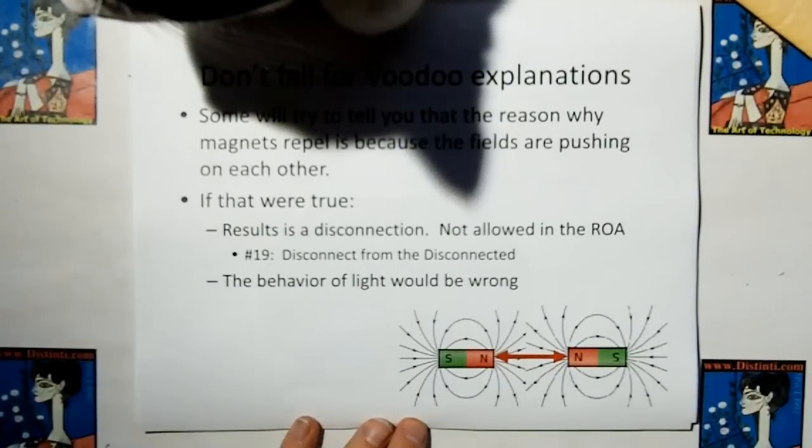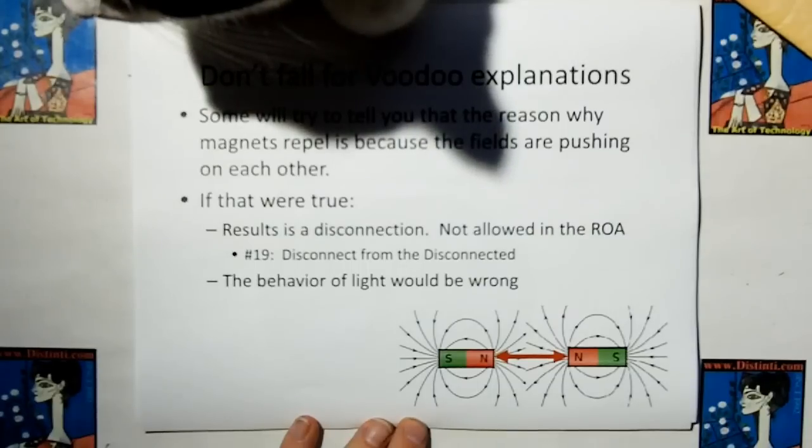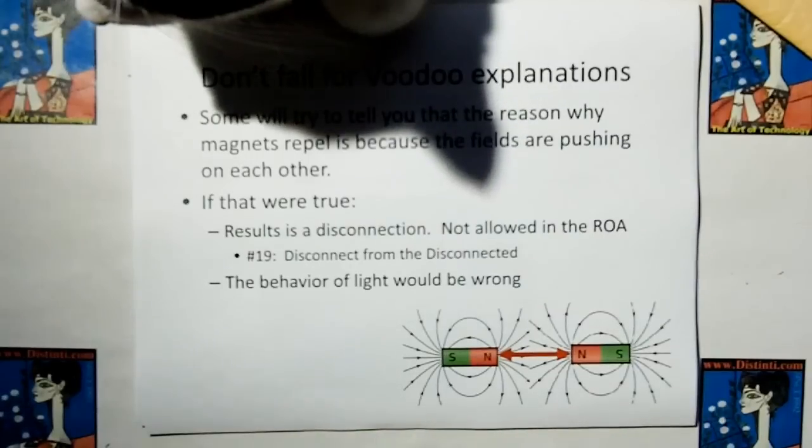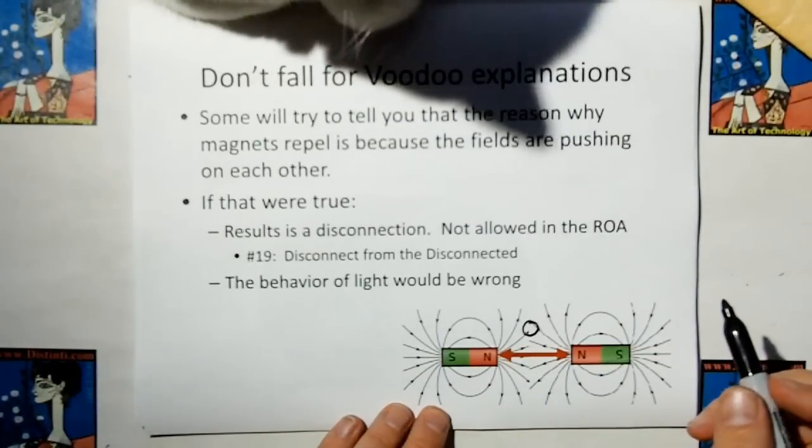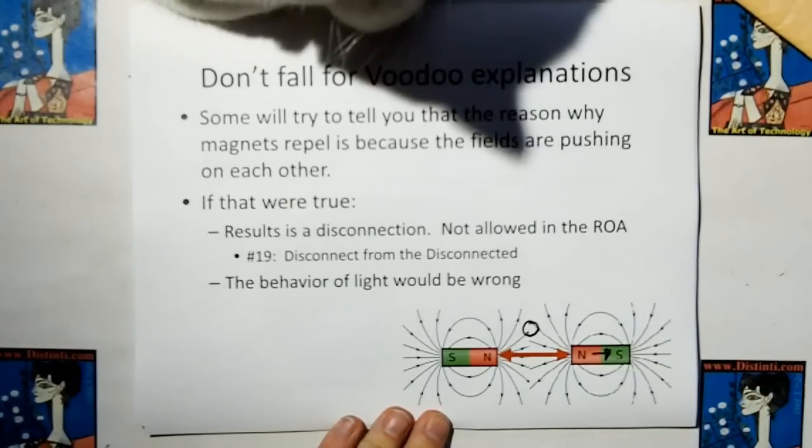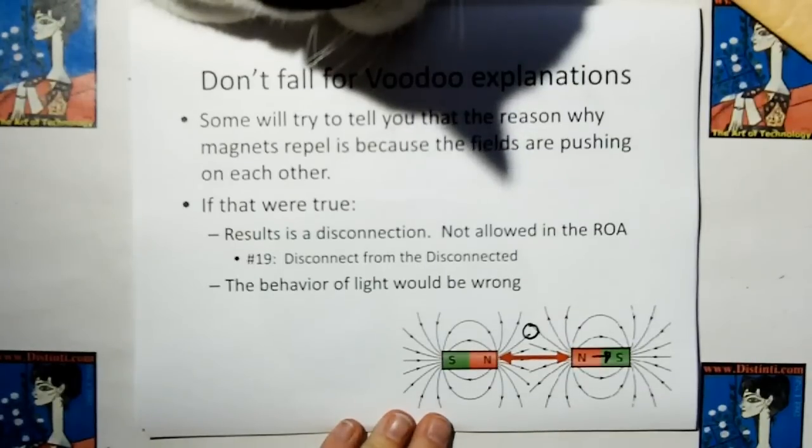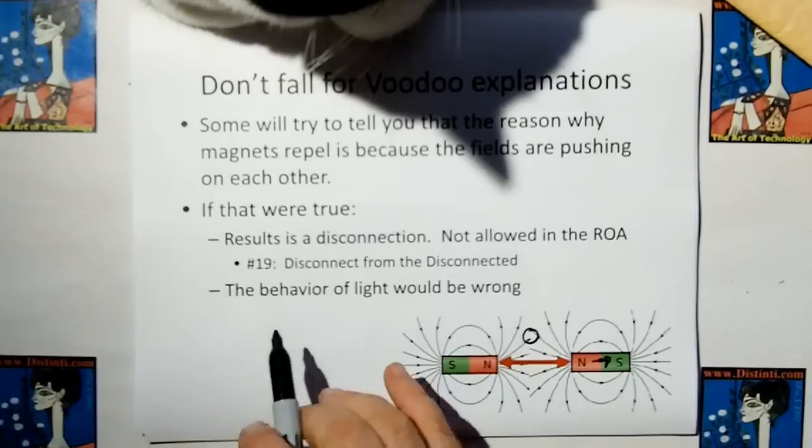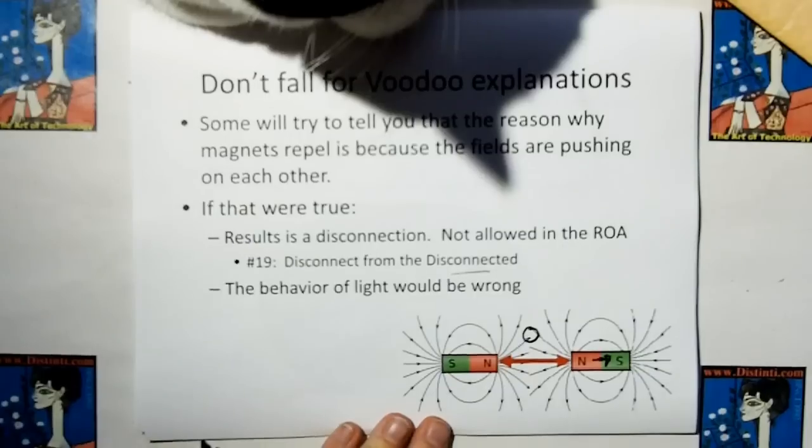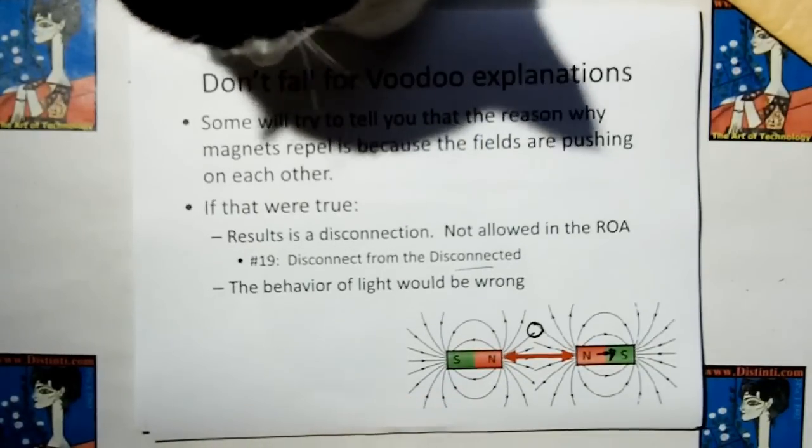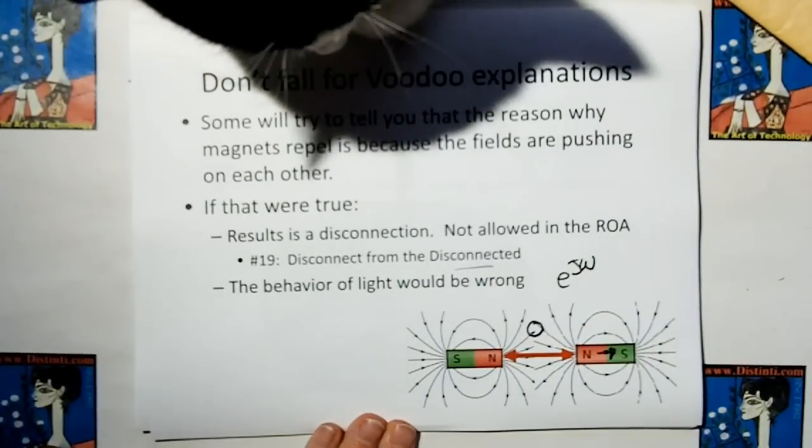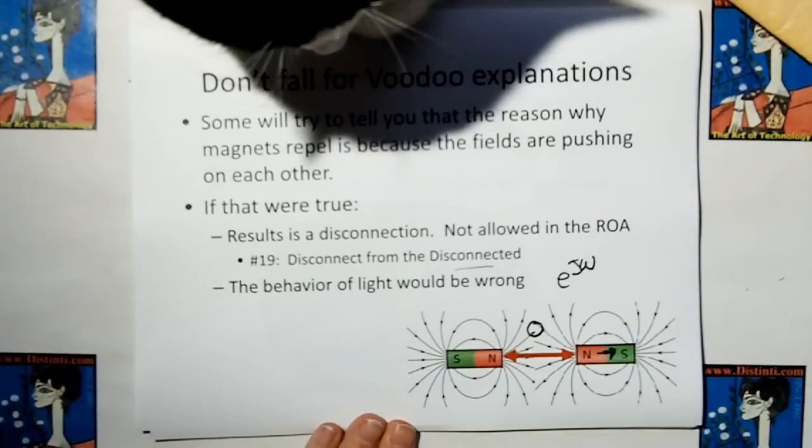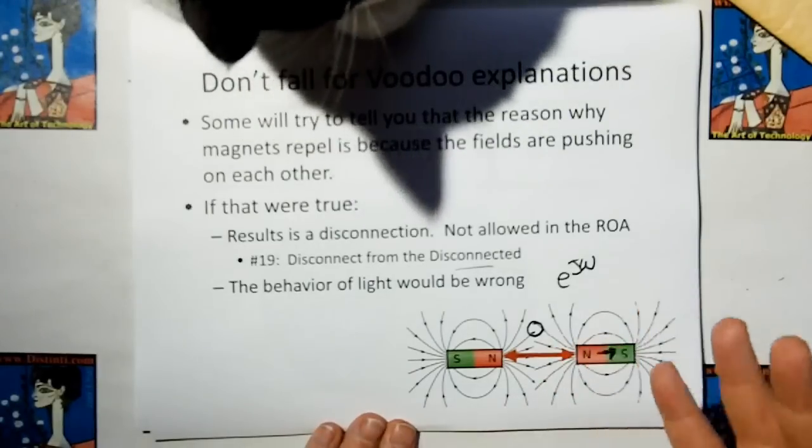Don't fall for the voodoo explanations. There's a lot of people out there that will tell you that magnets repel because the fields are pushing apart on each other, and they can show you how the iron filings in this area show up. But if that were true, there would be two problems. First, there would be a disconnection. How does the repulsion of the magnetic field lines out here correlate to every force acting on this magnet over here? That's a disconnection between action and reaction. The action and the reaction have to be in the same place. Also the behavior of light would be wrong.